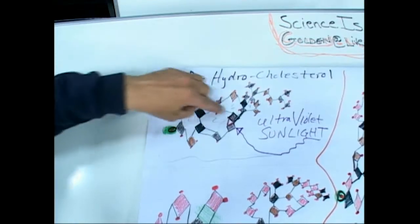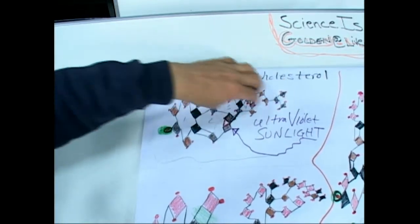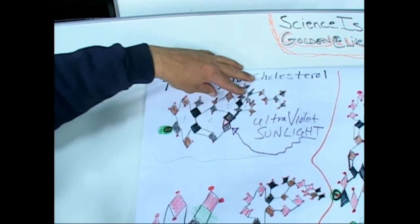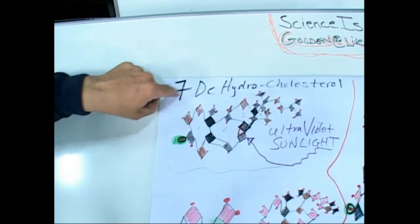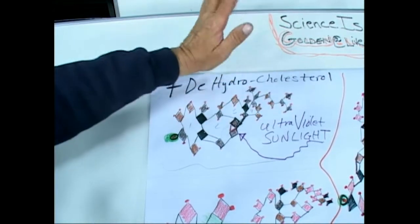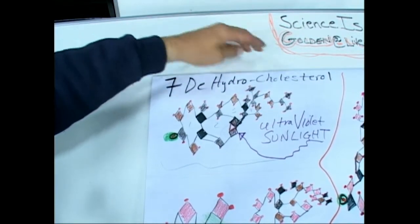See, that's still got the four rings in there, the big old cholesterol side group as usual. One little OH out there. So that's 7-dehydro because it took the other OH off, cholesterol.